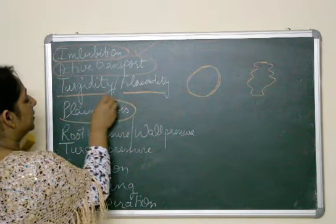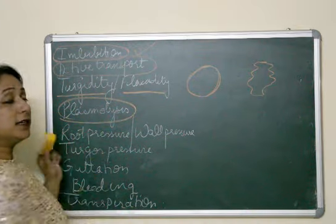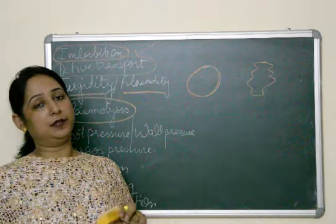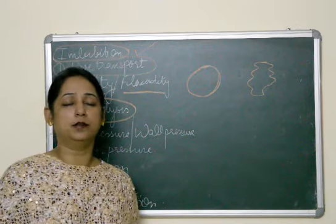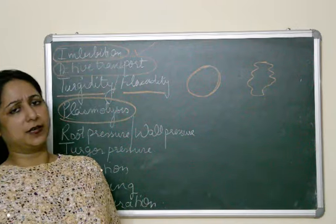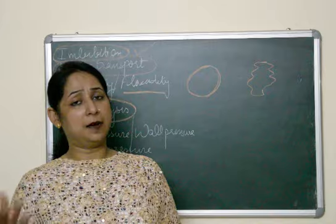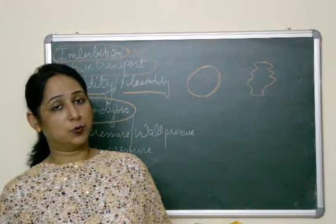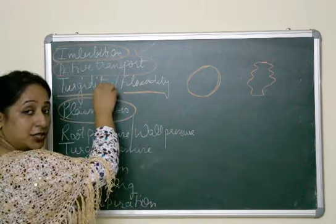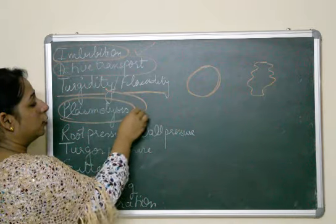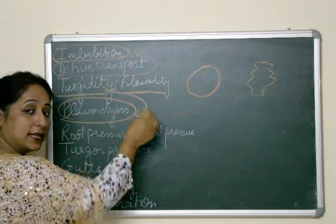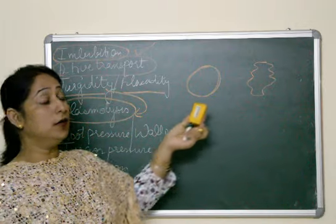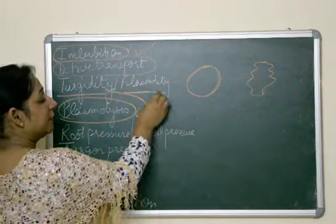Next is plasmolysis. This term is similar to swelling but is explained differently. The swelling up of the cell by absorption of water is known as plasmolysis. That is, the process of turgidity is also known as plasmolysis. When the cell swells up by absorbing water — it has a different term but the definition is the same.